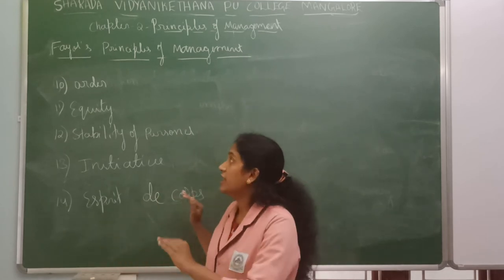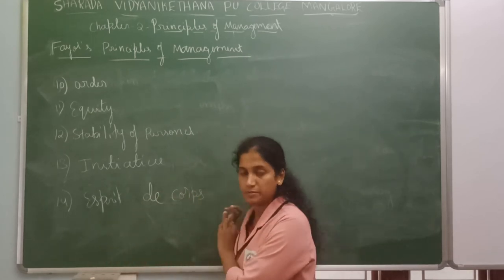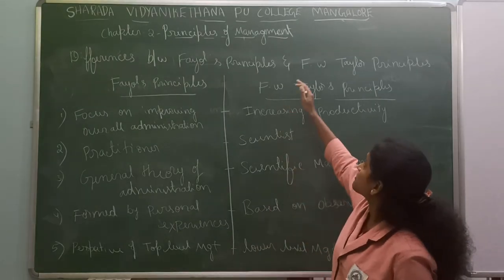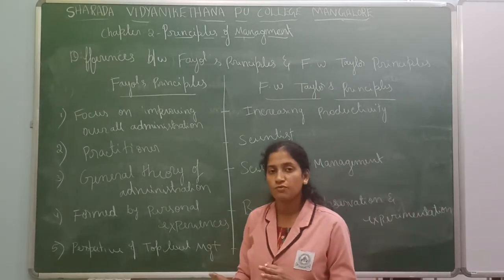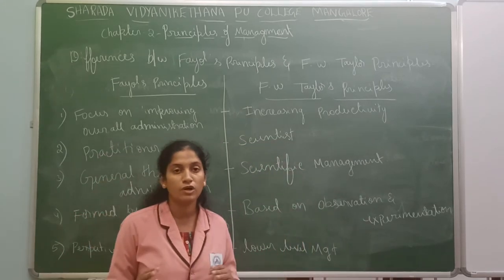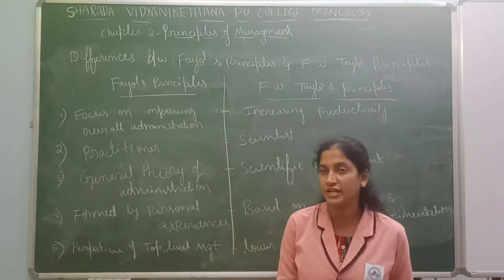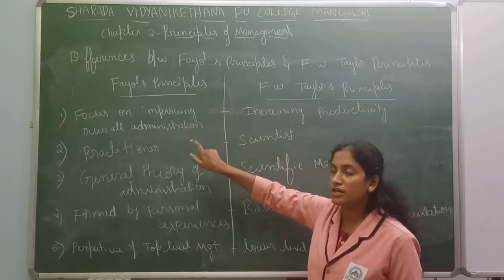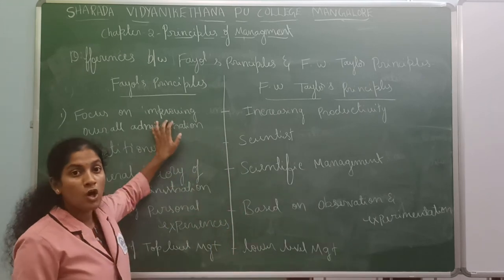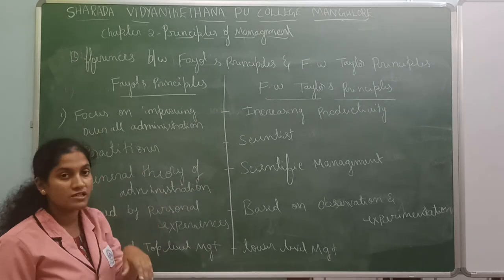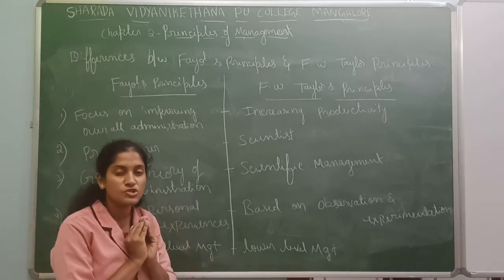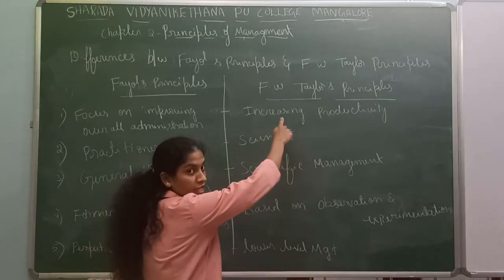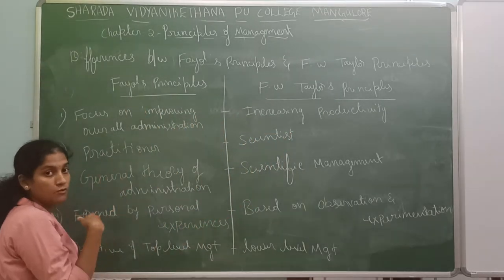Next we will see the differences between Henry Fayol's principle and F.W. Taylor's principle — the last topic of this chapter. Fayol is concentrating on the overall administrative improvement of the organization. But Taylor is concentrating on productivity — his main aim is to increase productivity. Fayol's principle is about overall improvement of the organization, whereas Taylor's principle is about increasing production and productivity.